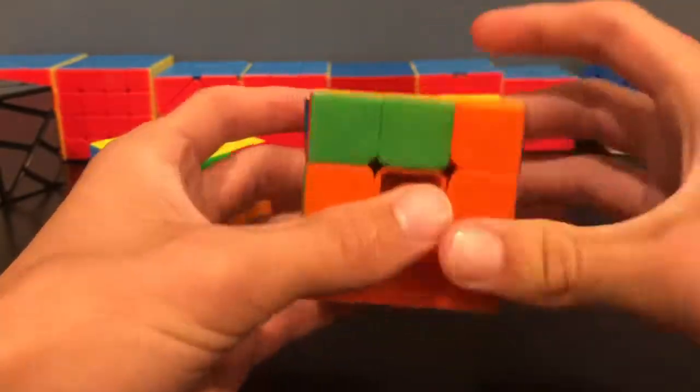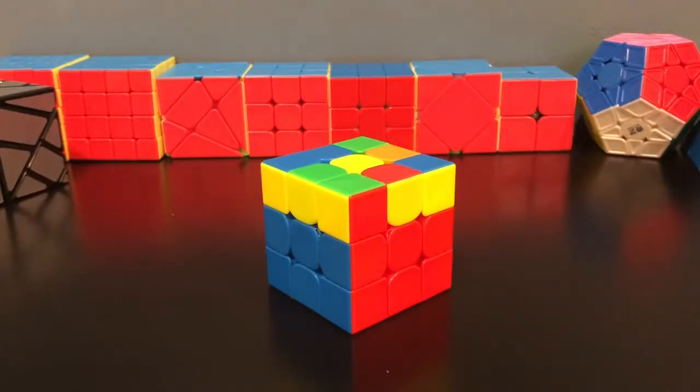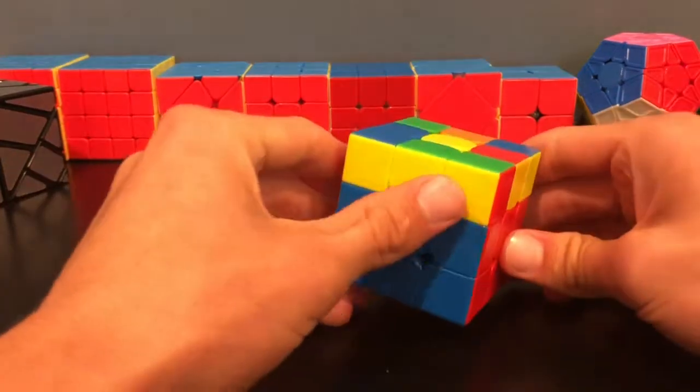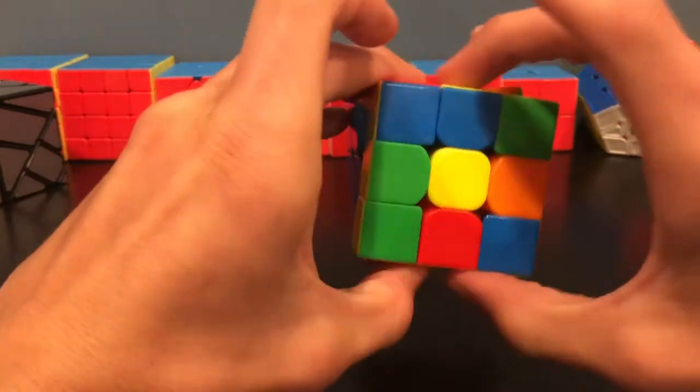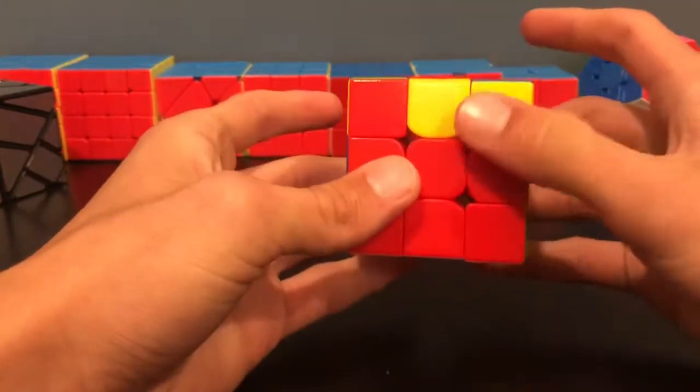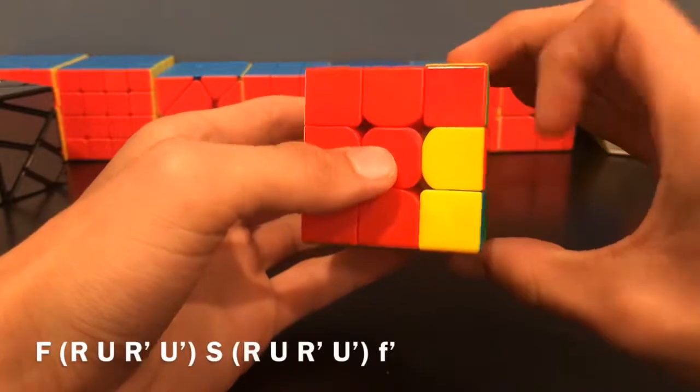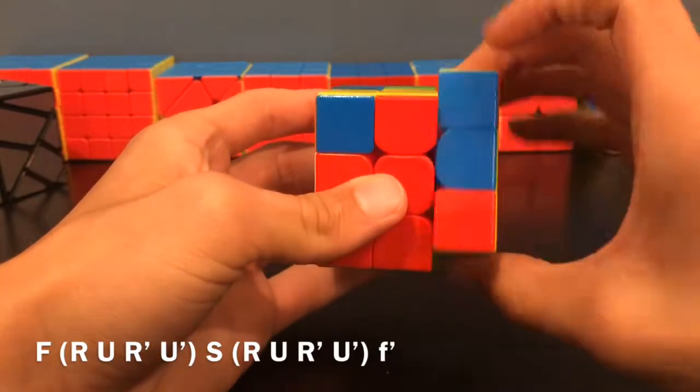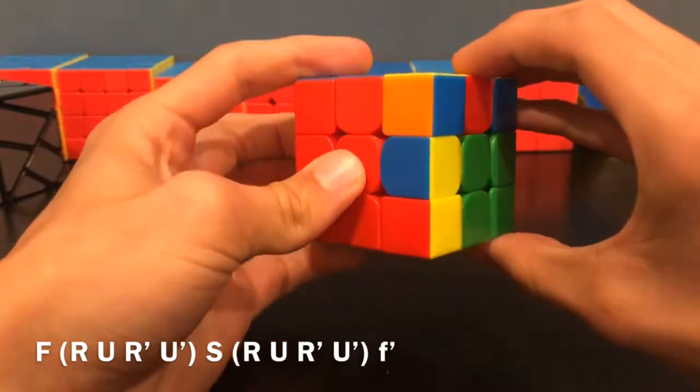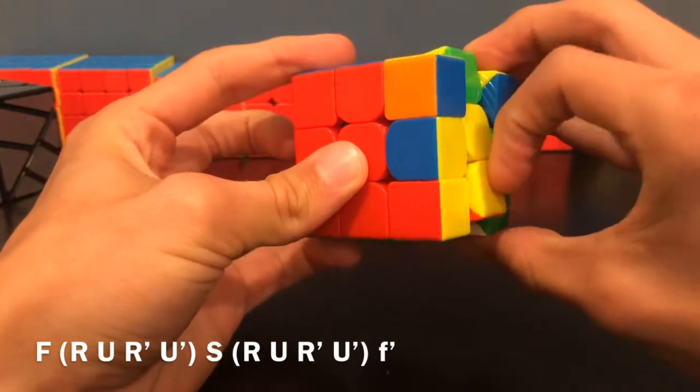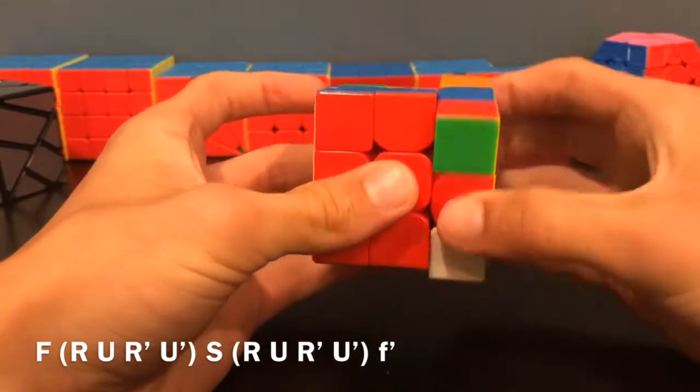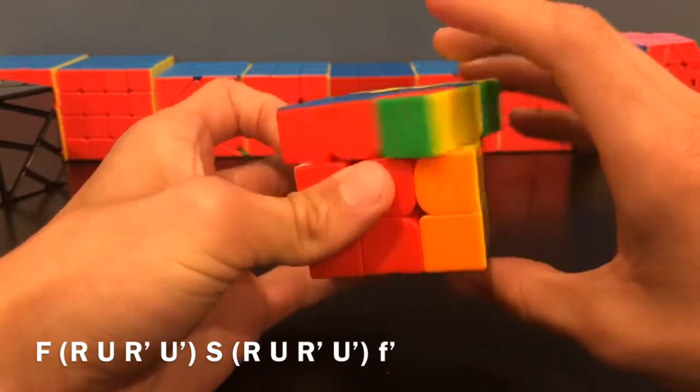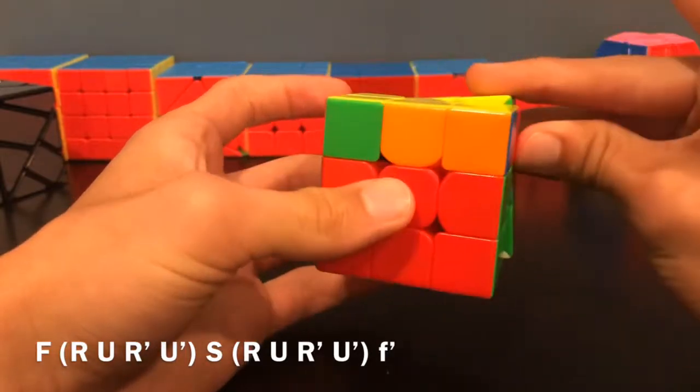This next case is in my opinion the easiest dot case, and this algorithm is what I used before I learned full one-look. You have a block of three but then you have two blocks of two. You'll hold this one in front of you, then do: F R U R' U' S R U R' U' F'.